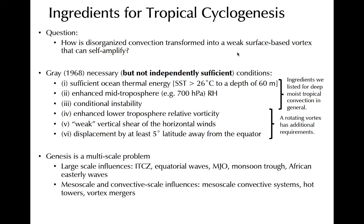Several requirements must be met for tropical cyclogenesis to occur. Many of these are the same as the general requirements for tropical convection to develop and persist. First, sufficient fluxes of energy from the ocean to the atmosphere must be possible. This usually requires a deep mixed layer of warm ocean temperatures — not only 26 degrees Celsius or greater, although a few TCs have developed over cooler SSTs.